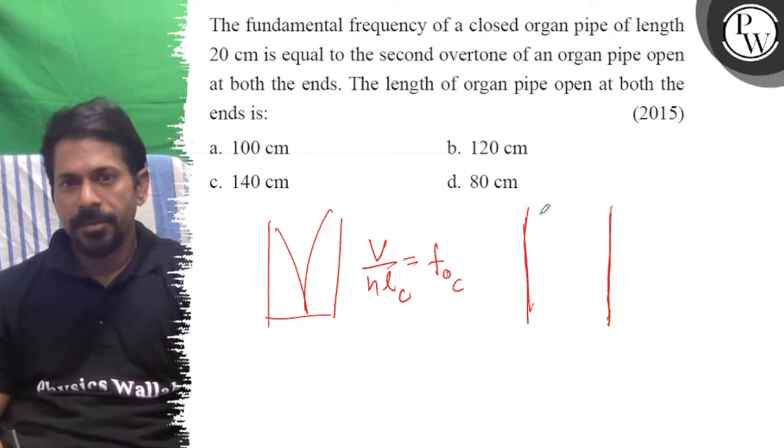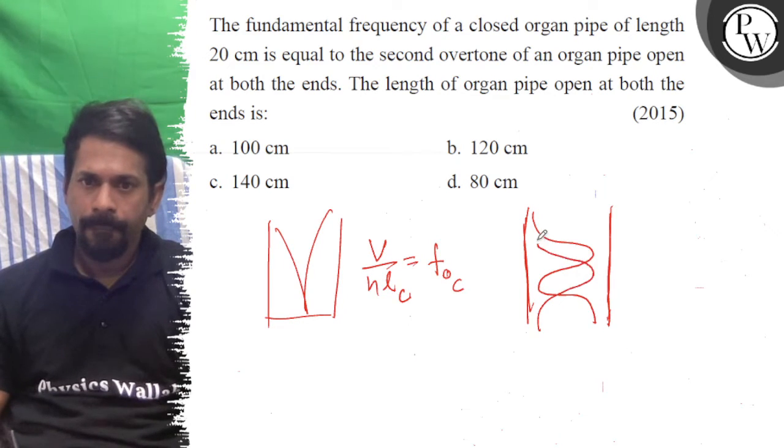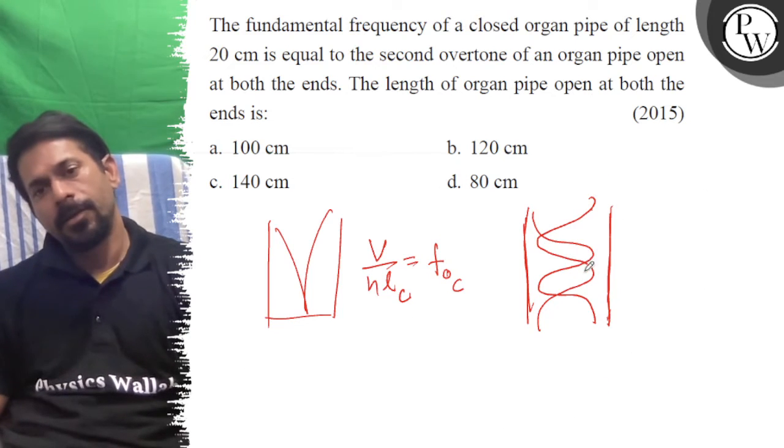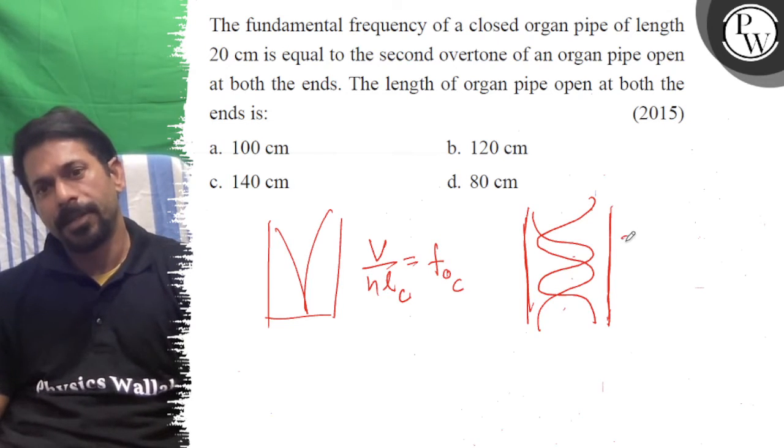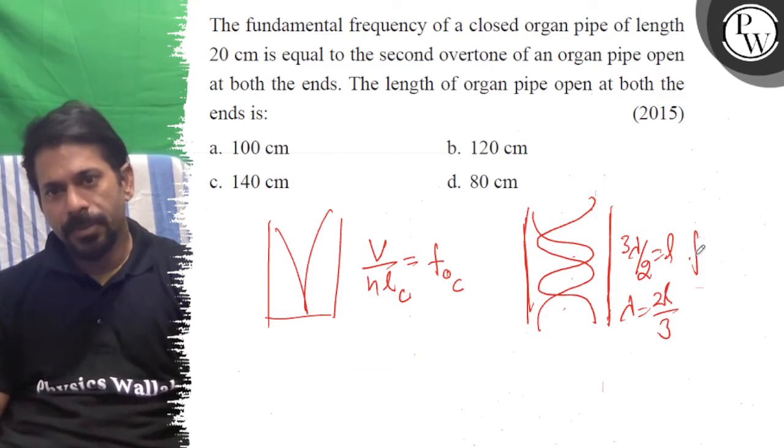First, this mode is second. So second, this is two loops. So this is lambda by 2, lambda by 2, lambda by 2. This is equal to L. So lambda is equal to L by 3. So frequency is 3V by 2L.